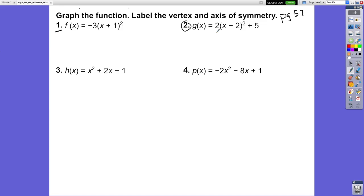The first thing to make this easy is to recognize that this is in vertex form. Start by identifying what a is, what h is, and what k is. So a is 2, h is 2 (not negative 2), and k is 5.